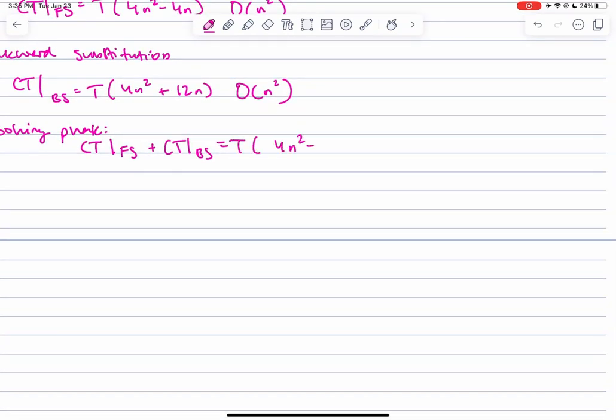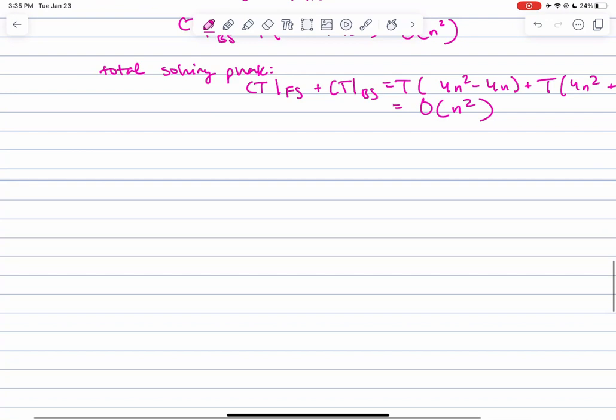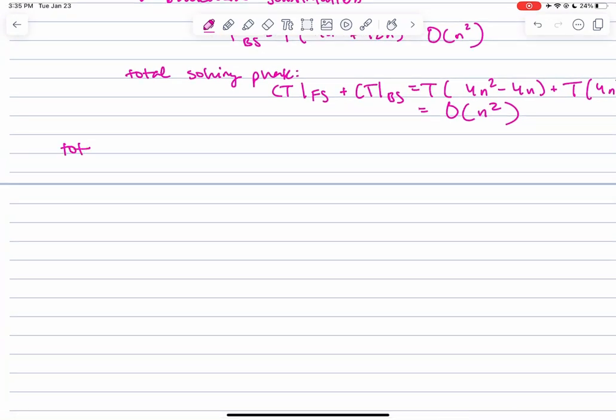The overall time complexity of the solving phase is this, which also has a big O of n². Since the factorization phase has a time complexity of big O of n³, that lets me know it's a computationally expensive phase.